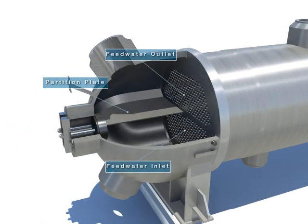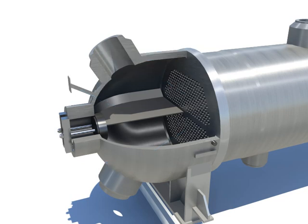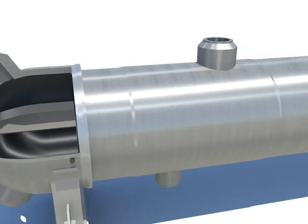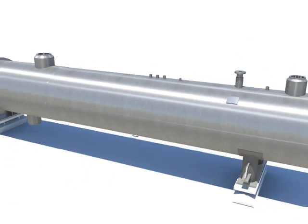The feedwater inlet and feedwater outlet are feedwater gates, and the partition plate is installed to divide the inlet and outlet.